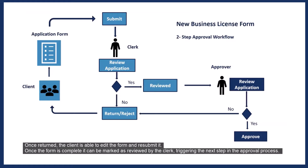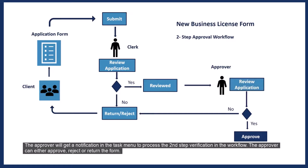Once the form is complete, it can be marked as reviewed by the clerk, triggering the next step in the approval process. The approver will get a notification in the task menu to process the second step verification in the workflow. The approver can either approve, reject, or return the form.